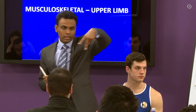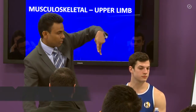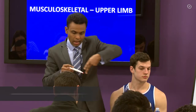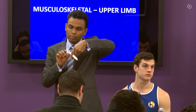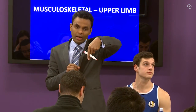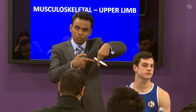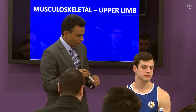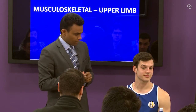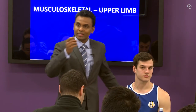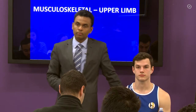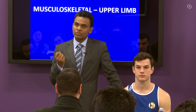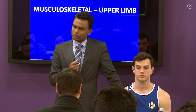The scalene muscles come from the transverse processes of the vertebrae in the neck. The nerve roots emerge between the scalene muscles, which is why when you do an interscalene block, that is where you are targeting. What is the function of the scalene muscles? Where are they, where do they originate, where do they insert, and is it important to know?